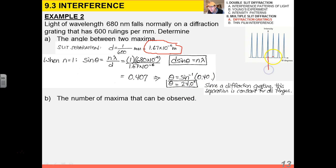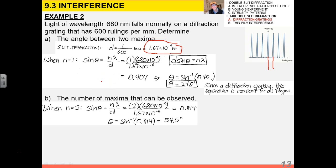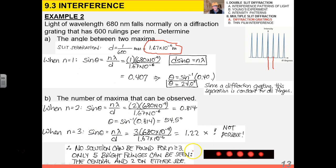That means that in this diagram right here, that distance would be 24 degrees, and that's going to be the same between every single maximum. When the number of maxima that can be observed, what I'm going to do is I'm just going to test it for different values of n and see at what point my sine function blows up. I've already done 1. I'm going to do n equals 2, and I found that theta equals 54.5. When n equals 3, I have that it's not possible because I have a sine that's greater than the number 1. So that's not possible. No solution can be found for n greater than or equal to 3. Therefore, only 5 bright fringes can be seen - the central and 2 on either side.